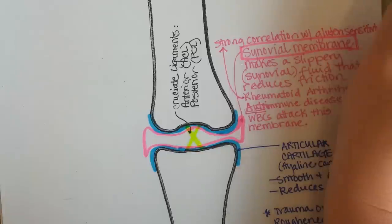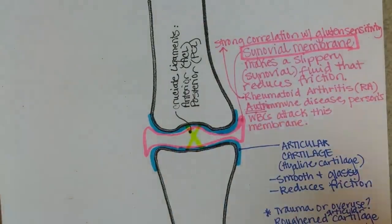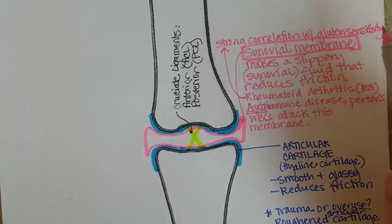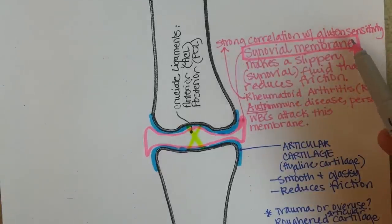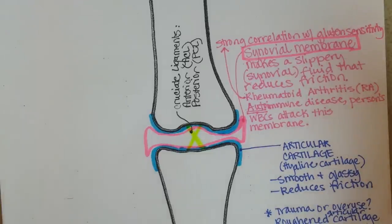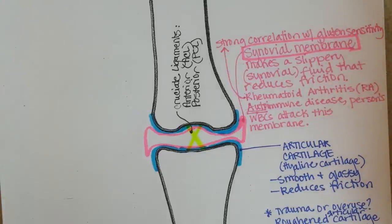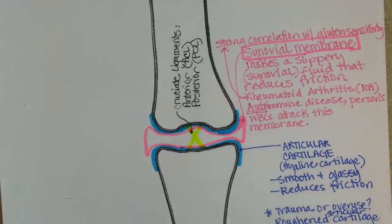As we've talked about before, correlation does not equal causation, so that doesn't mean we know for sure that gluten causes rheumatoid arthritis. There does seem to be an association — people with gluten sensitivity are more likely to have RA, and vice versa. Nonetheless, if you know someone with rheumatoid arthritis, it would be worth a try to remove gluten from their diet for three to six months and see if there's any improvement. It can't hurt.